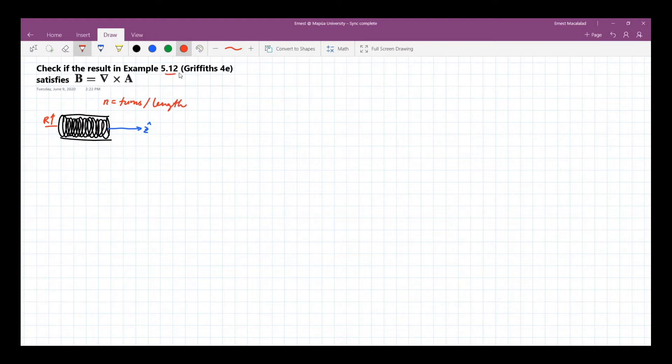This has been discussed in videos, and the resulting magnetic field would be equal to mu naught n I z hat inside, and then zero outside.